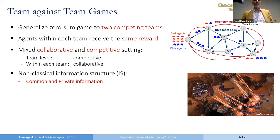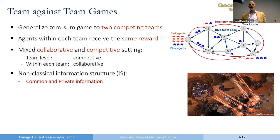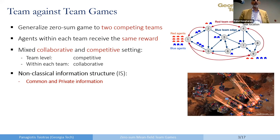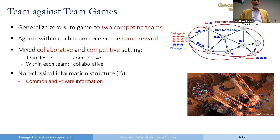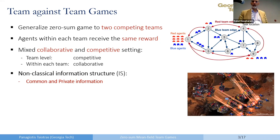This is a difficult problem in general. We want to generalize zero-sum games for two competing teams. To make the problem tractable, I assume that each team will receive the same reward. The complication is that players within a team collaborate while the two teams compete against each other — so there are two levels: intra-team collaboration and inter-team competition. The problem may also have different information structures, with some common information shared by all and some private information known only to certain agents.